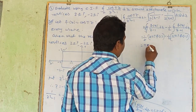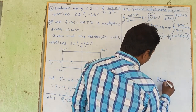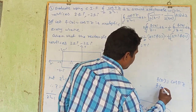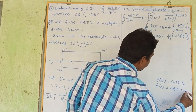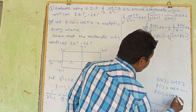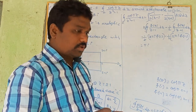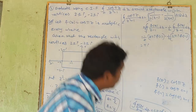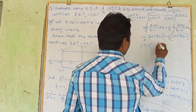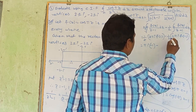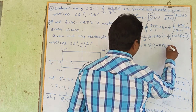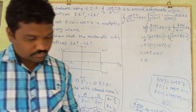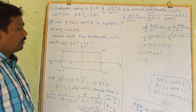Substituting: the integral over C of cos πz/(z² minus 1) dz equals (1/2) times 2πi times F(1) minus (1/2) times 2πi times F(minus 1). F(1) = cos π = minus 1. F(minus 1) = cos(minus π) = cos π = minus 1. Therefore the answer is πi times (minus 1) minus πi times (minus 1) = minus πi plus πi = 0.